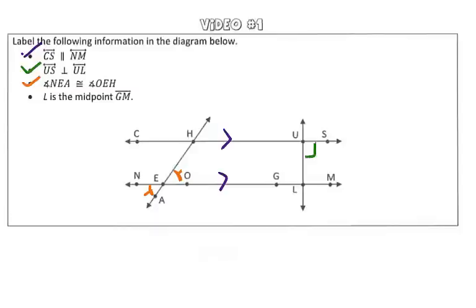And last but not least, we are told to show that L is the midpoint of GM. Well, we learned that a midpoint divides a segment into two congruent segments. So if L is the midpoint of GM, that means that segment GL is congruent to segment LM. So we use our tick marks to show that.